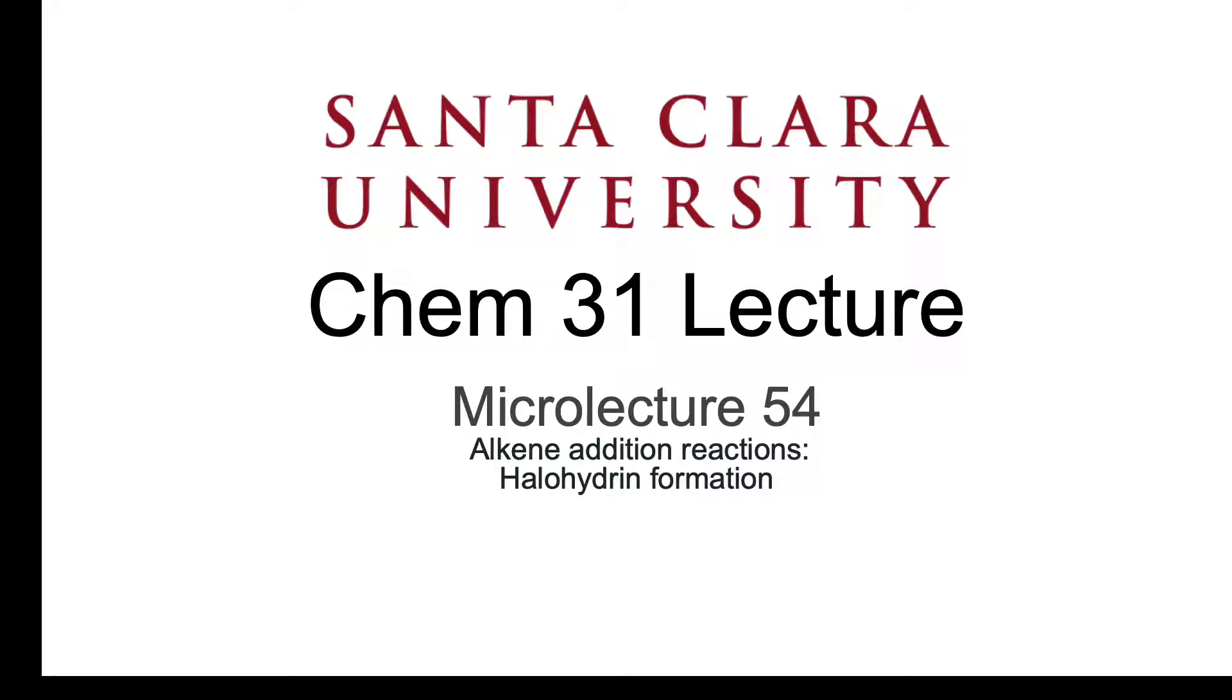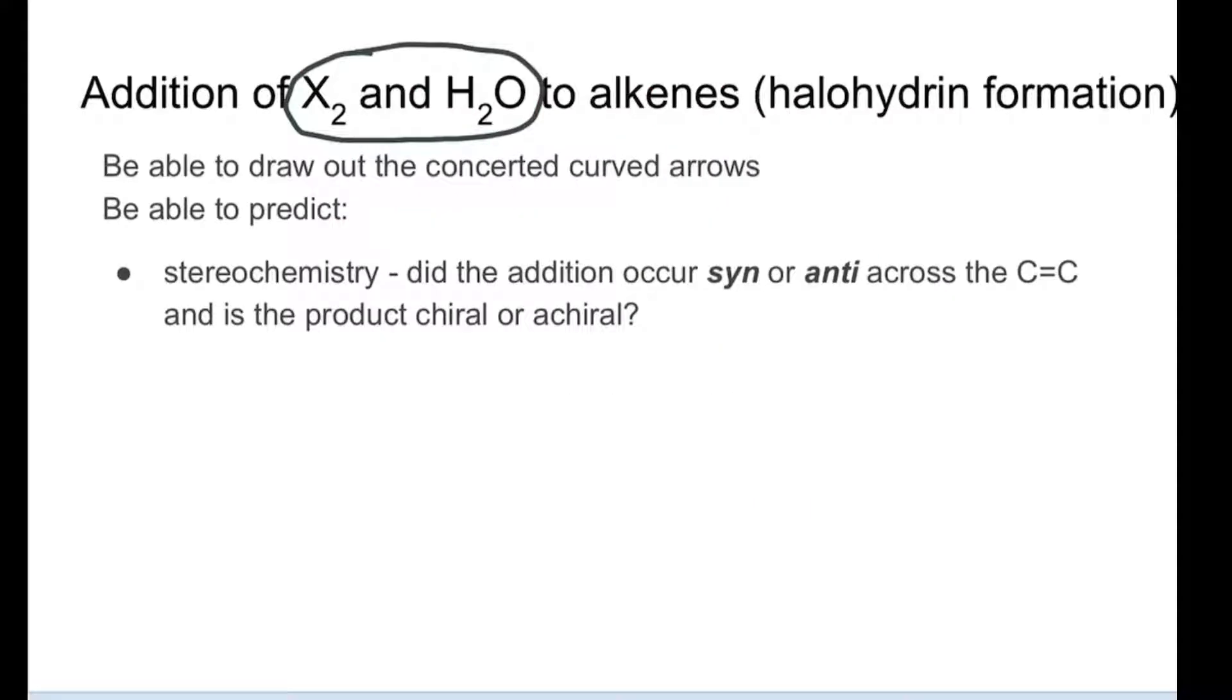Welcome to micro lecture 54, this is halohydrin formation. In this reaction we're adding X2 and water across the double bond so that only one of the halogen atoms adds and then an OH from the water also adds. These two add in an anti fashion. The curved arrow mechanism is very similar to what you're already familiar with, and so predicting the products is very similar as well.